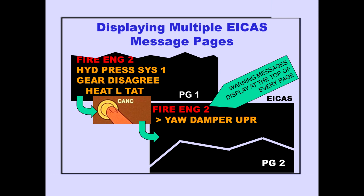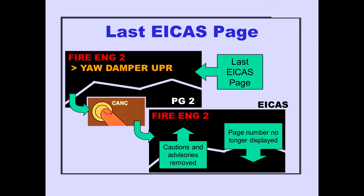ICAST warning messages from page one are displayed at the top of each page. By pushing the cancel switch when the last page of messages is displayed, all ICAST caution and advisory messages and the page number will no longer be displayed.